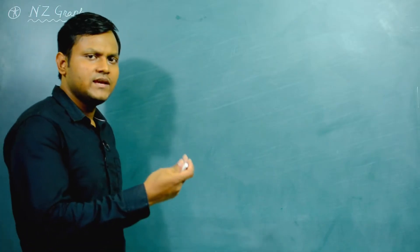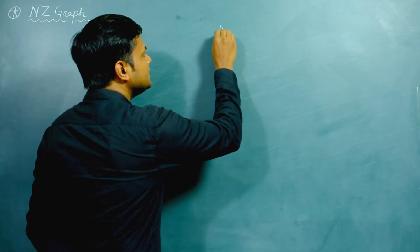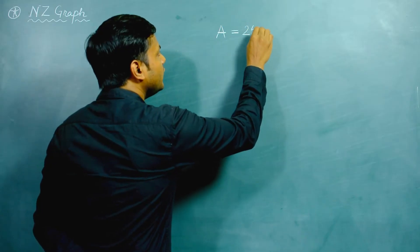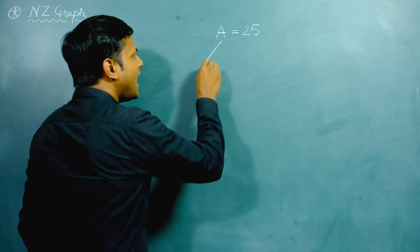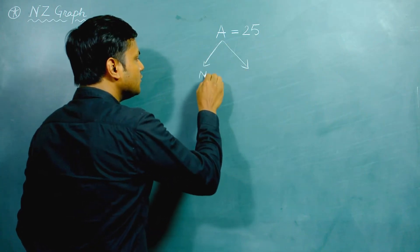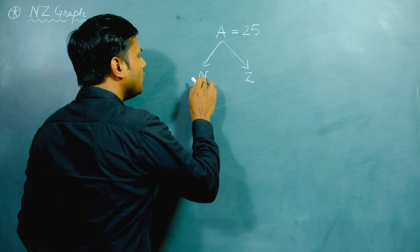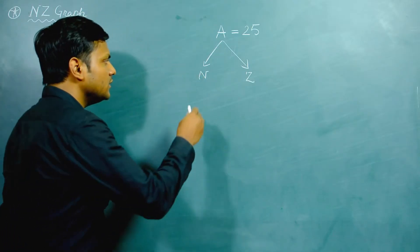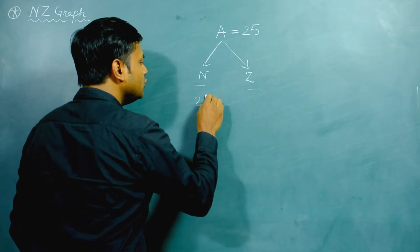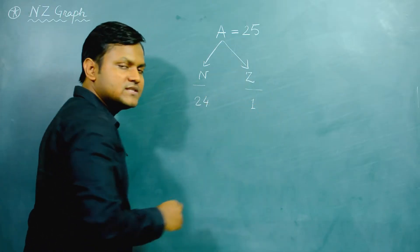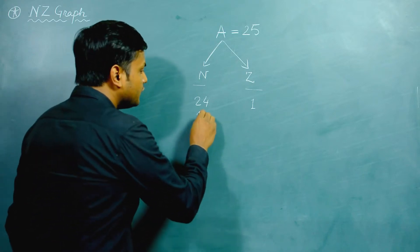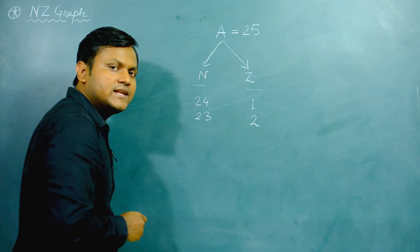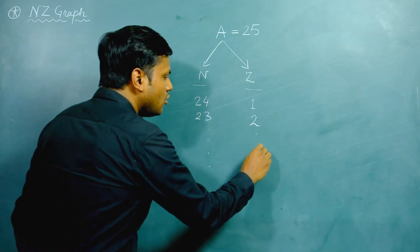Not all combinations of neutrons and protons can form stable nucleus structures. Let's take an example: a nucleus with mass number A equal to 25, meaning there are 25 particles inside the nucleus composed of neutrons and protons. What is going to be the number of neutrons and protons? Is it possible to have 24 neutrons and 1 proton, or 23 neutrons and 2 protons? We can consider all these combinations.